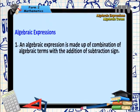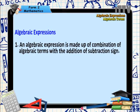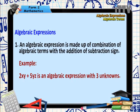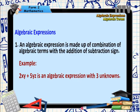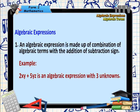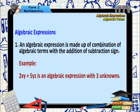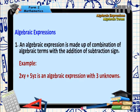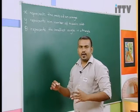An algebraic expression is made up of a combination of algebraic terms with the addition or subtraction signs in them. The following example is an algebraic expression with 3 unknowns: 2xy plus 5yz. Therefore, there are 3 unknowns which are x, y and z.